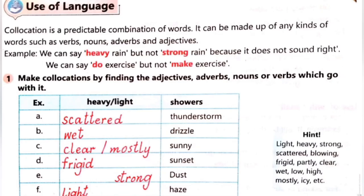Use of language — collocations. Collocation is a predictable combination of words. Predictable ka matlab hai mutwaqqa, peesh aane wali — jis ki hum tawaqo kar rahe hote hain. Collocation kya hai — ek mutwaqqa majmua hai alfaz ka. It can be made up of any kinds of words such as verbs, nouns, adverbs and adjectives. For example, we can say 'heavy rain' but not 'strong rain'. Jab bhi rain se pehle agar tez barish ki baat ho rahi hoti hai to aapne 'heavy rain' ka word hi sunogay, kabhi 'strong rain' ka word nahi sunogay — because it does not sound right.